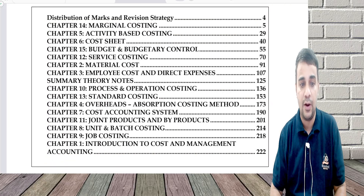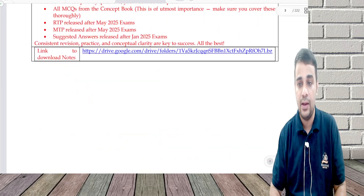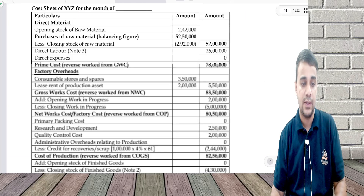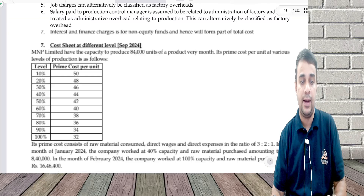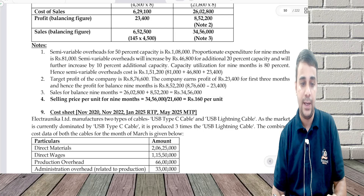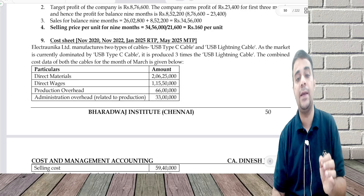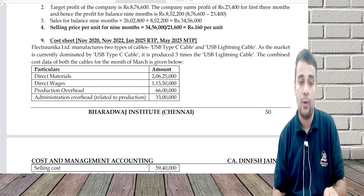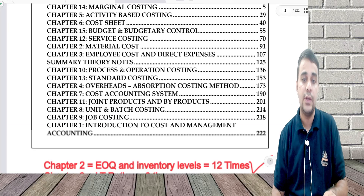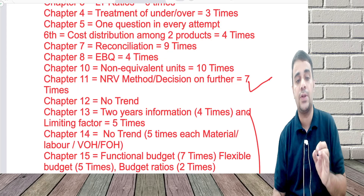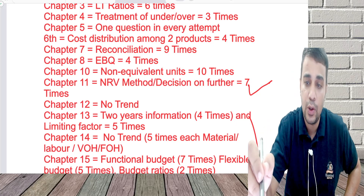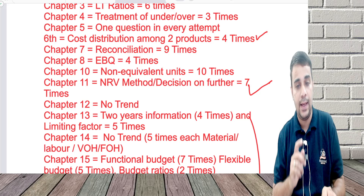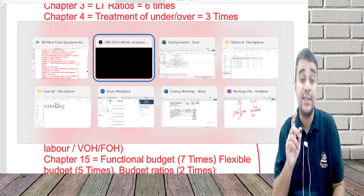In Chapter 6, there is one category of question — distribution of cost product-wise — where they ask for product-wise distribution of cost. This USB cable and lightning cable type of question has come four times in the exam. Others you may not be able to do, but at least cover this variant. Also, questions on inventory valuation are coming in the exam.